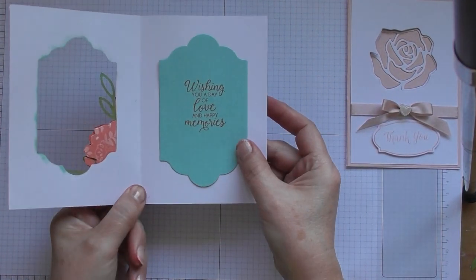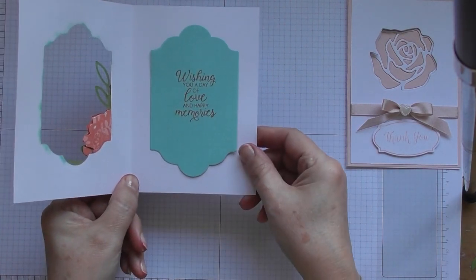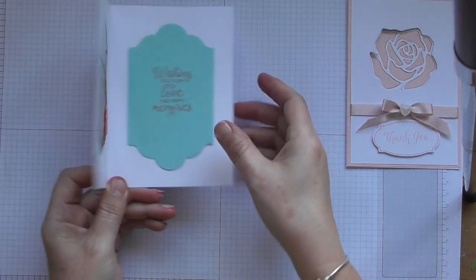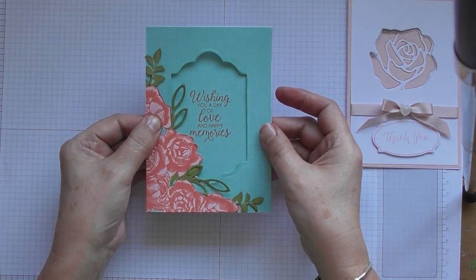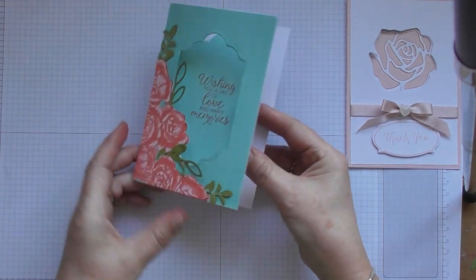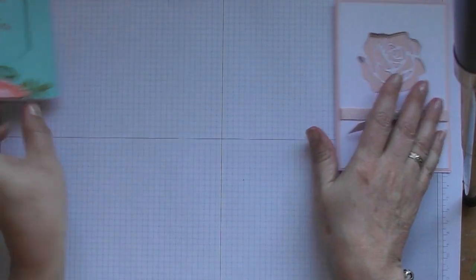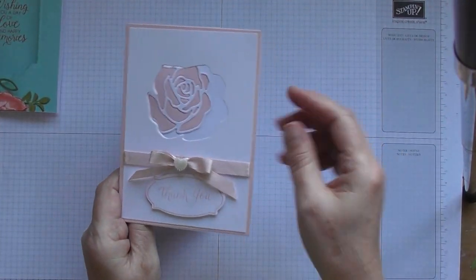The piece that I die cut is in the center on the inside. So that's one idea for an aperture. And then this one I just use the die to cut through the front of the card.